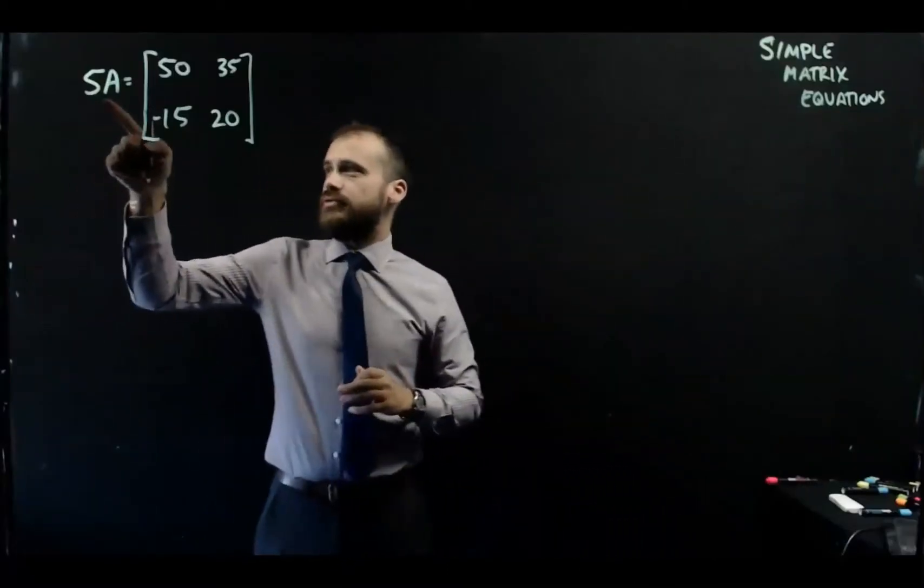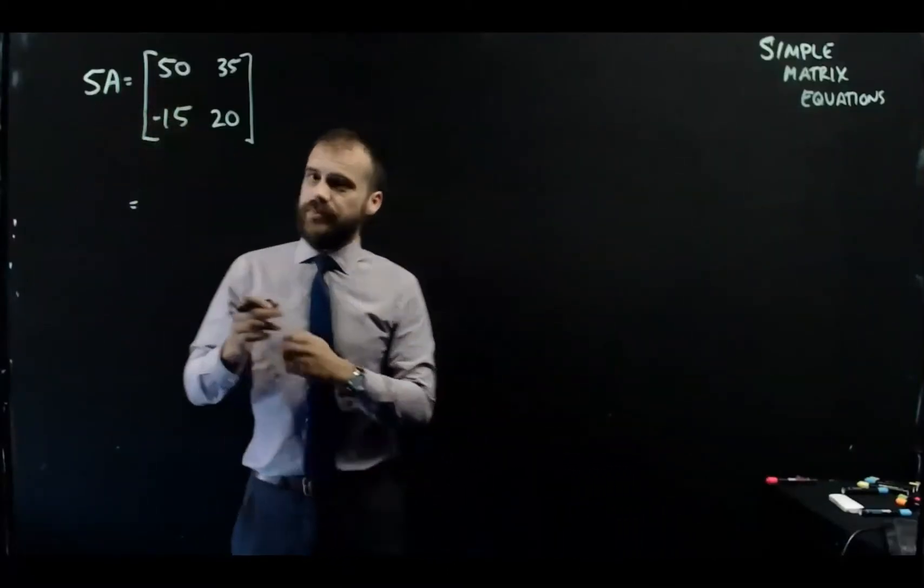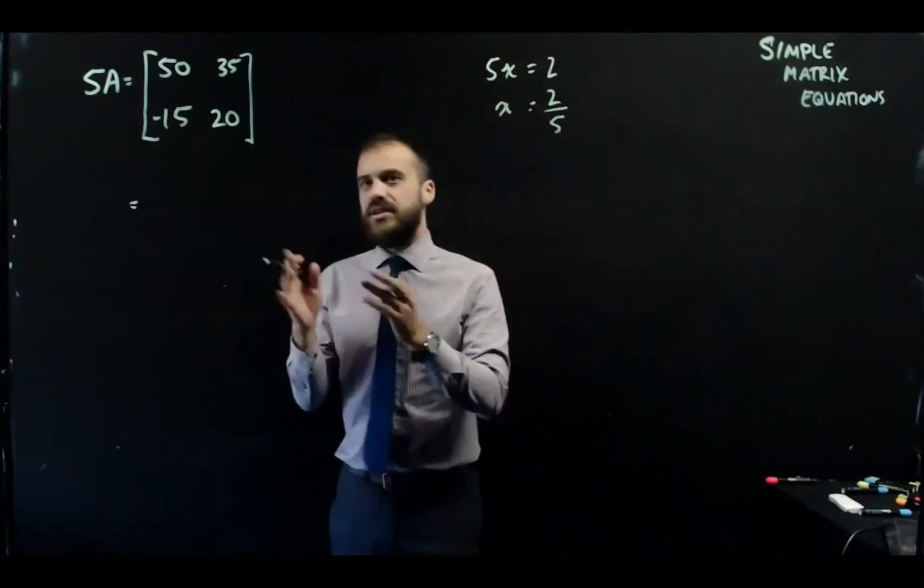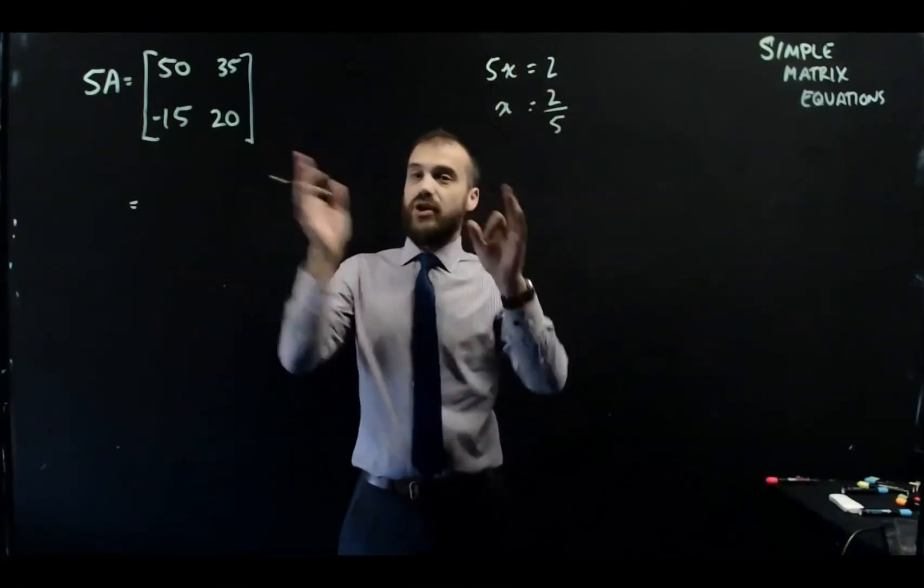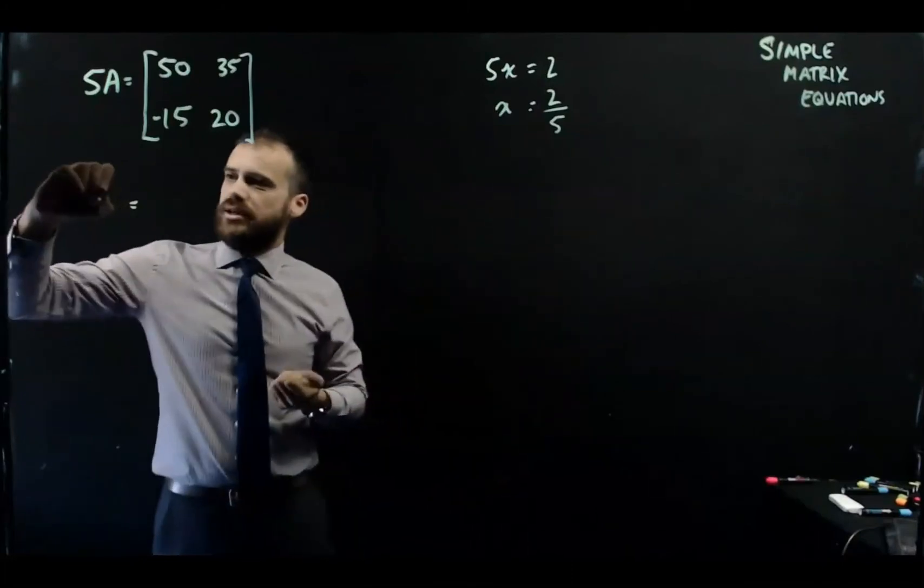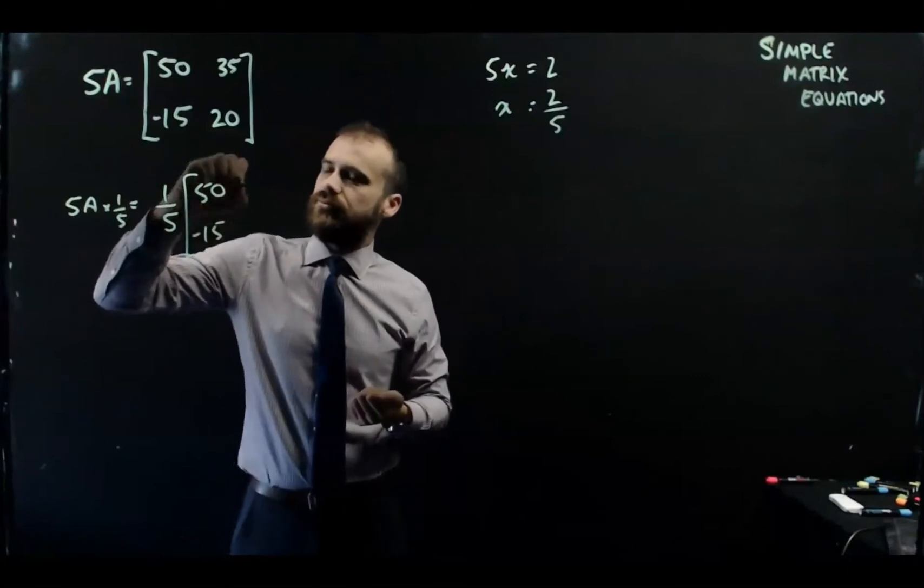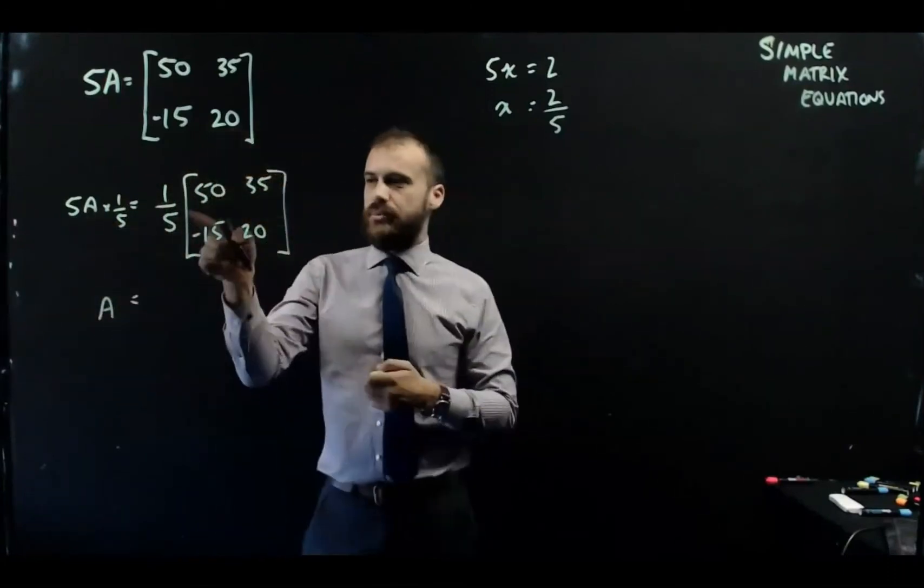All right, so simple matrix equations. Just the same way that you do like 5x equals 10, we can do the same thing. That's what I said, 5x equals 2. So we can do the same thing here. So we can't really divide a matrix. So we just multiply it by 1/5, which is the same thing.